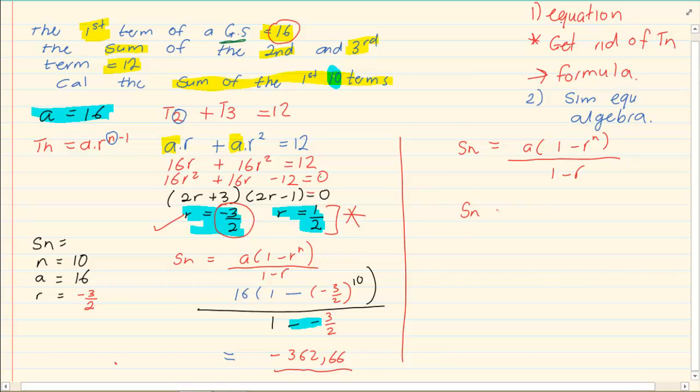So we have Sn is equal to 16 into one minus, and then we have half to the power of 10, all over one minus a half.